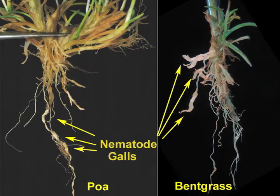The feature of root knot nematode that makes it easier to diagnose than other root nematodes are the characteristic knots or galls that it produces. Most other nematodes feed on the outside of the roots, making damage more difficult to see and diagnosis a little bit more difficult.